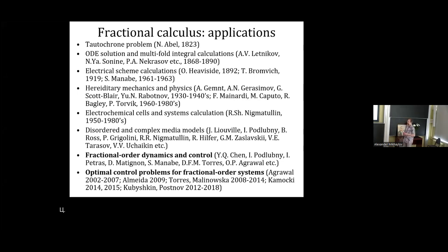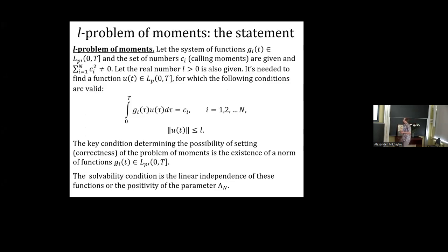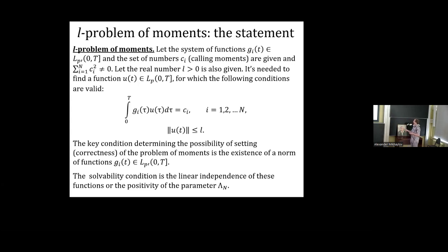We consider the following formulation of the L-problem of moments. We have a set of functions g_i from the space L^{p'}, and a set of numbers c_i — at least one of which is non-zero — and a real positive number a. We need to find a function u from the conjugate space L^p satisfying two conditions: the moment equations, and a restriction on the control norm, defined as the classical norm in L^p space.